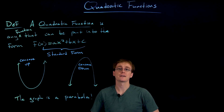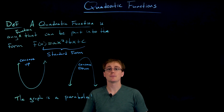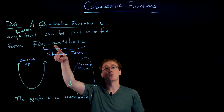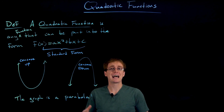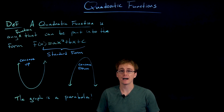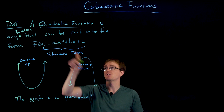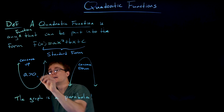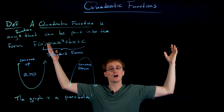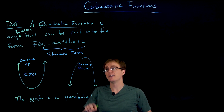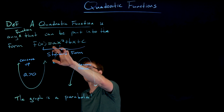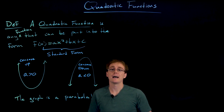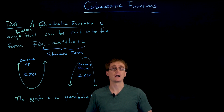We can determine the concavity of a parabola just by looking at the leading coefficient — the number that x² is being multiplied by. If that number in front of x² is positive, meaning a is greater than zero, then we're going to have a concave up parabola. If our a value or leading coefficient is negative, then we're going to have a concave down parabola.